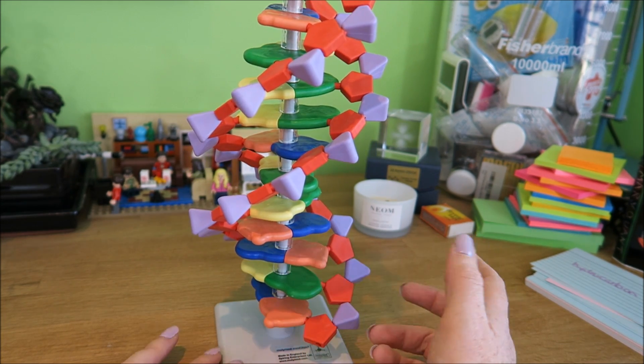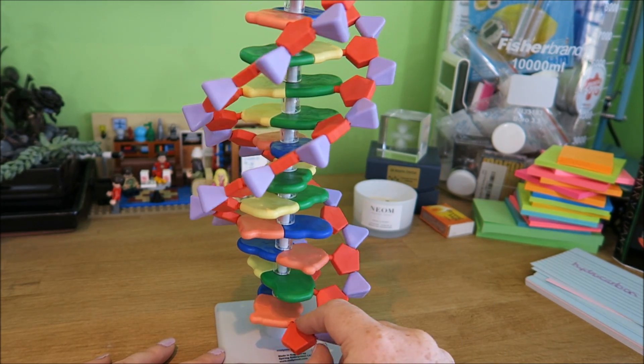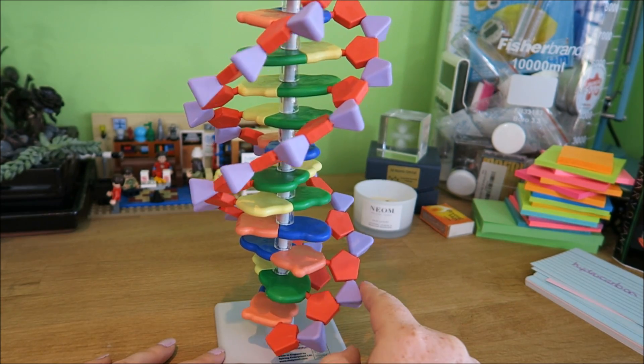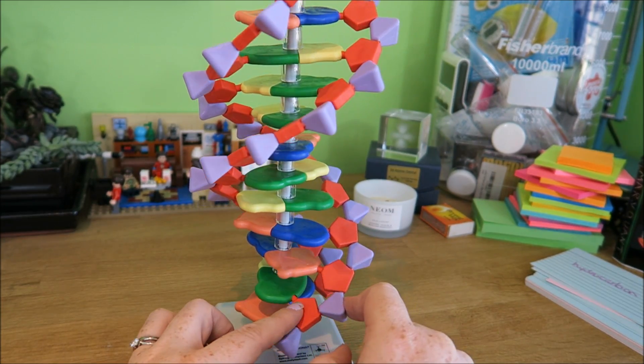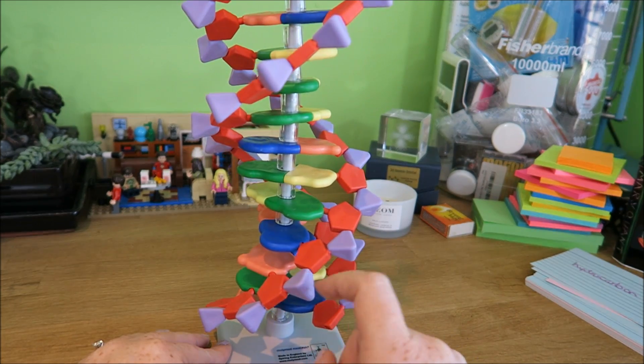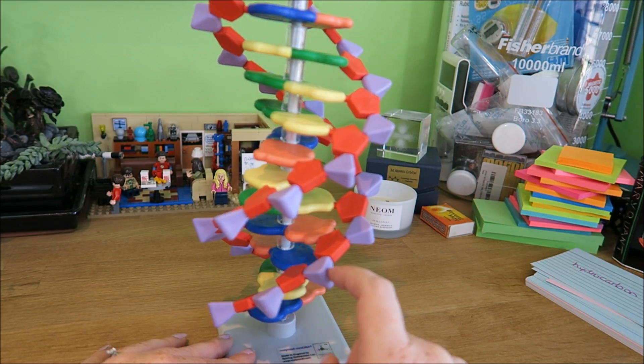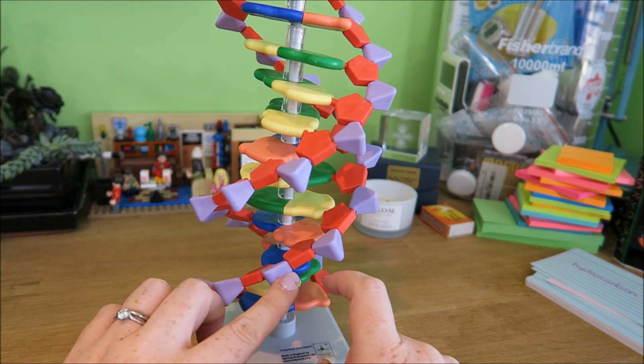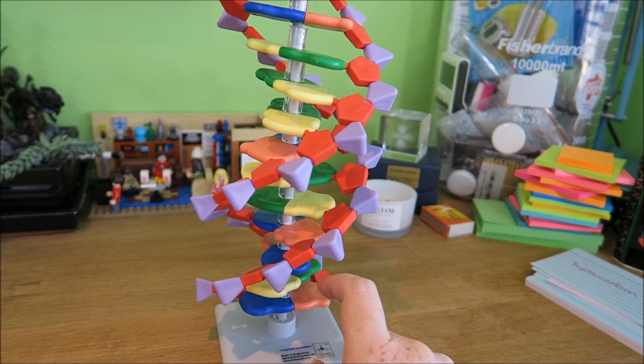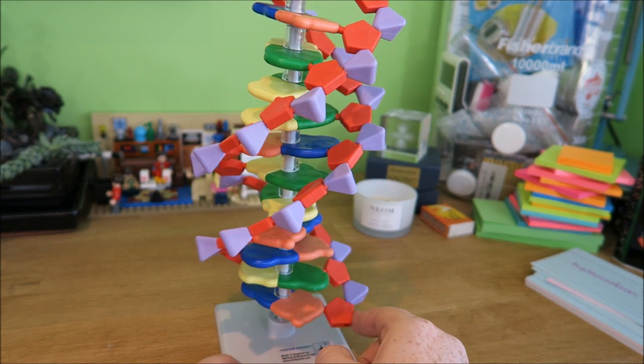And it doesn't really matter, well for the purposes of this model, there's no fixed order for them to go in. And then around the edge here we have our deoxyribose and our phosphates. And the way that these are structured means that this forms a double helix. So you can see that there are two helices here and they go around like this.